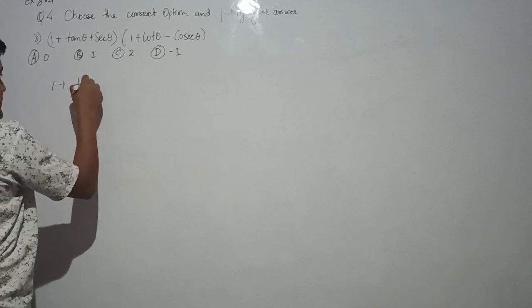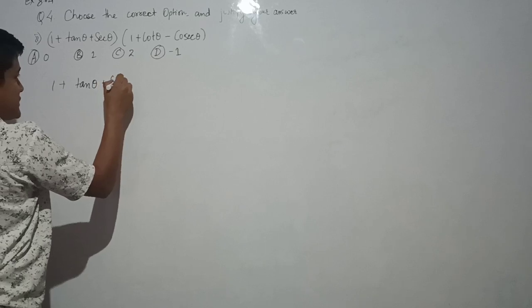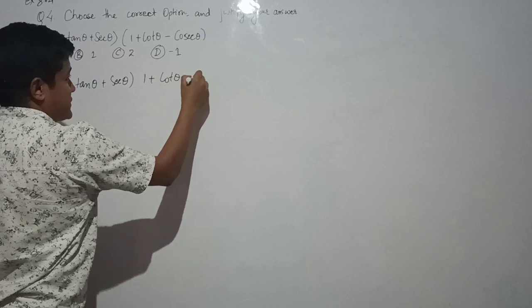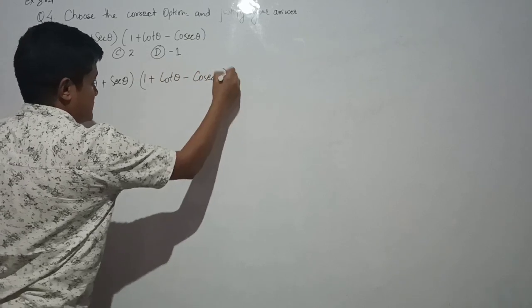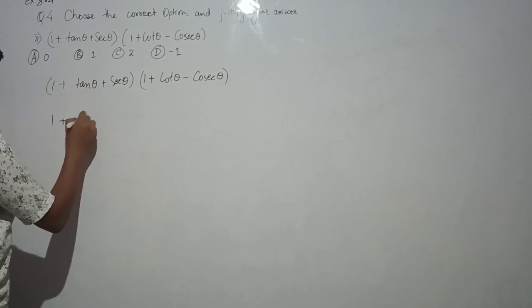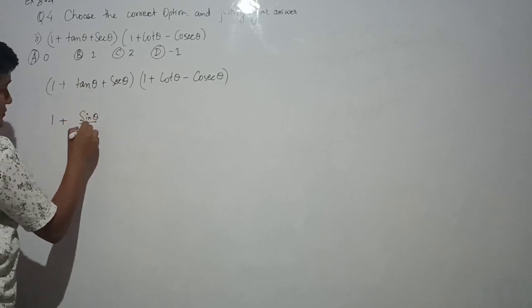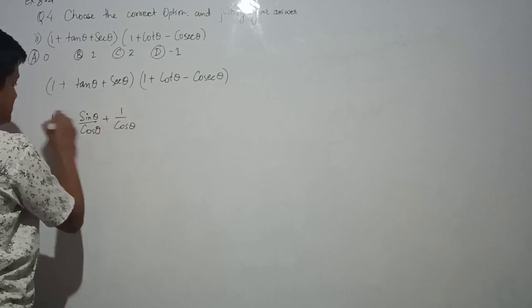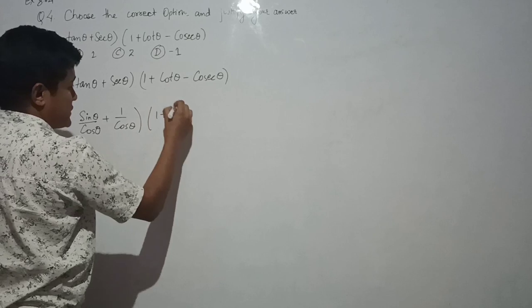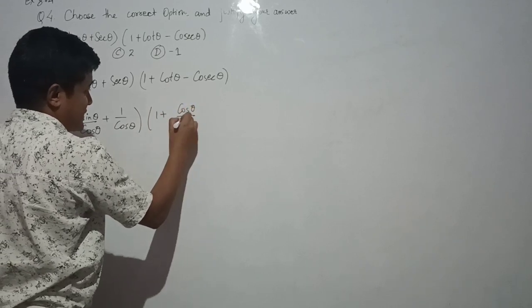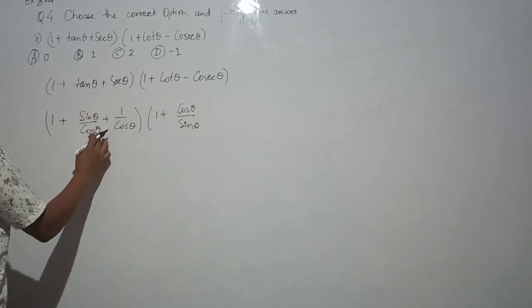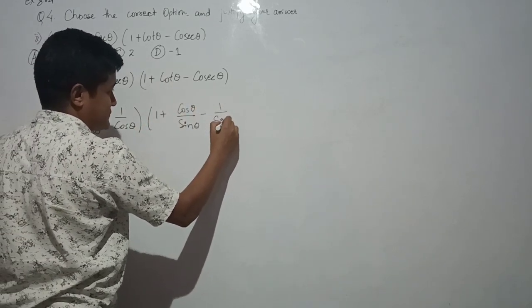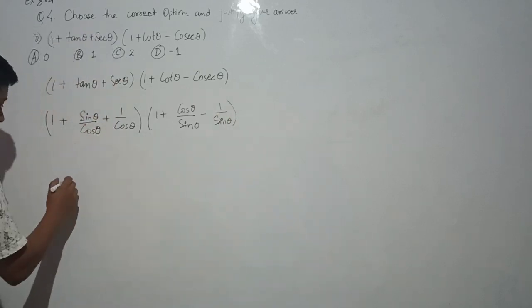So we write (1 + sinθ/cosθ + 1/cosθ)(1 + cosθ/sinθ − 1/sinθ). Now we need to take the LCM of each bracket to simplify.